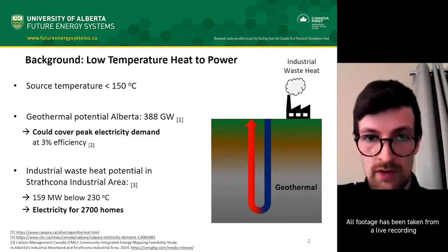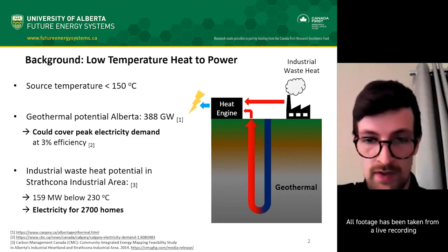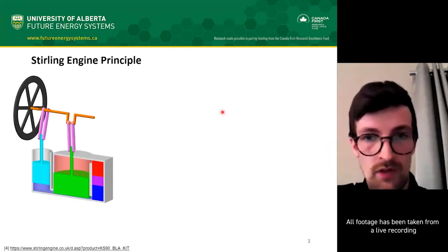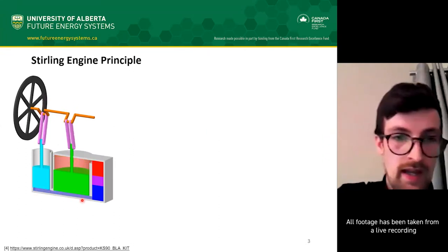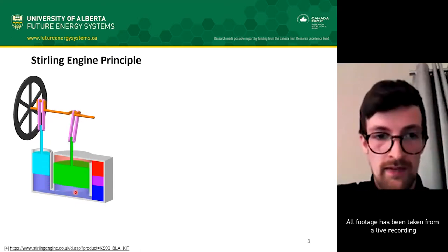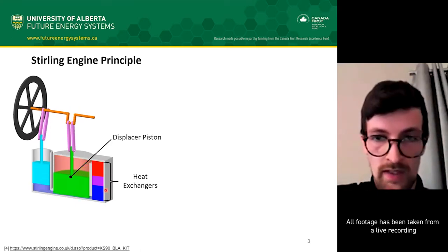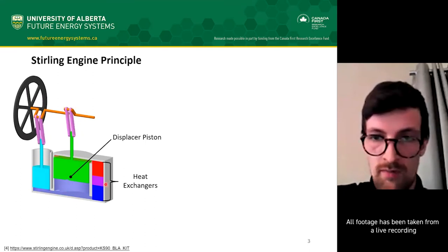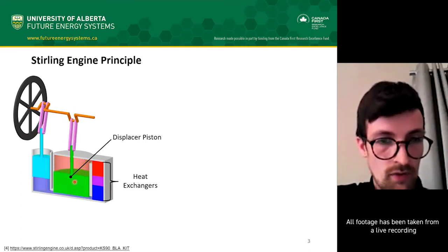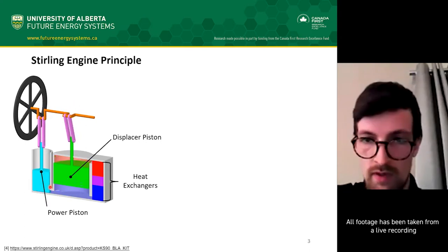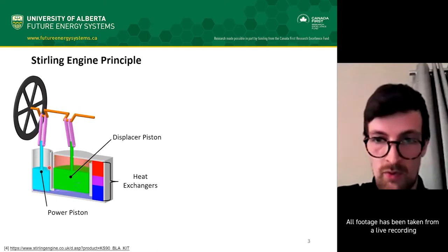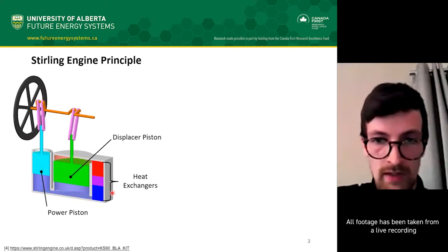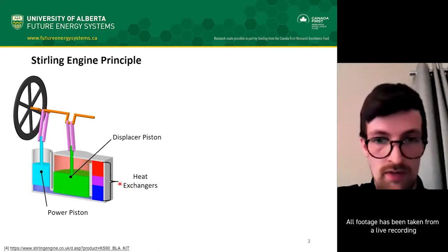This is where our research comes in, because heat engines such as Stirling engines can generate power from heat at any temperature. Stirling engines have two pistons that act on a closed working space filled with gas. The displacer piston moves gas back and forth through a set of heat exchangers, changing its temperature and pressure, as shown in green here. The power piston, shown in blue, makes use of the pressure changes to extract power by compressing and expanding the working space. Heat from any source is provided to the heat exchanger to drive the engine.